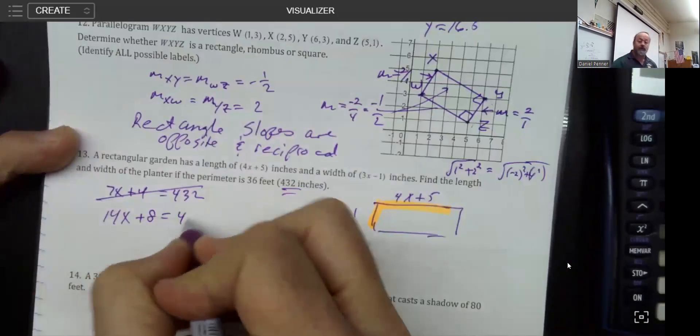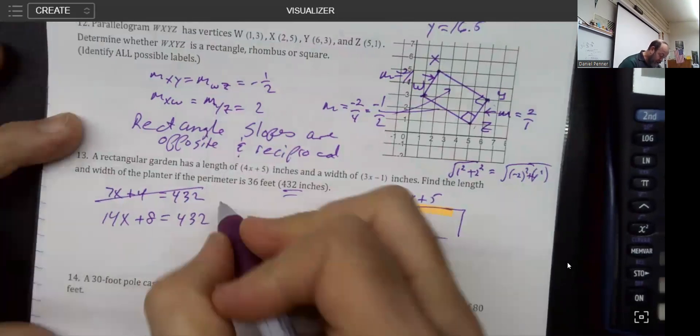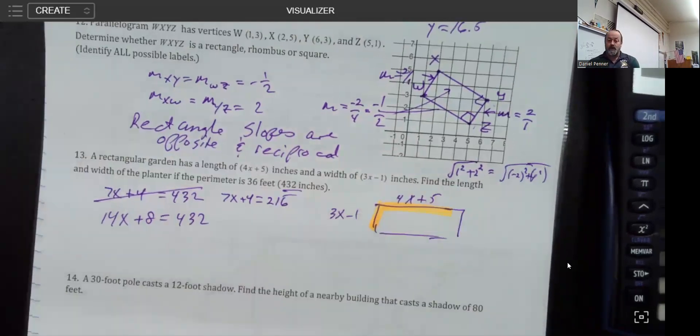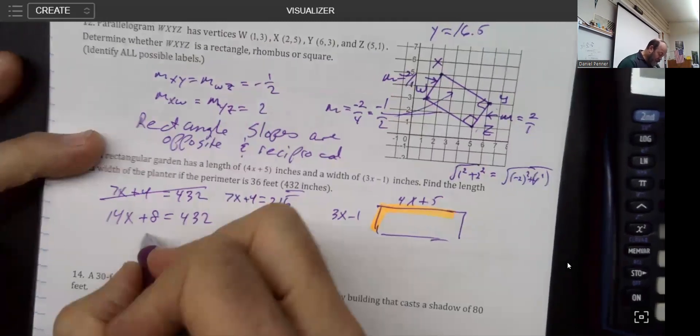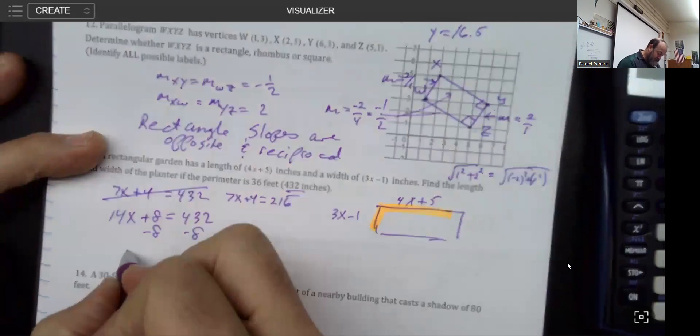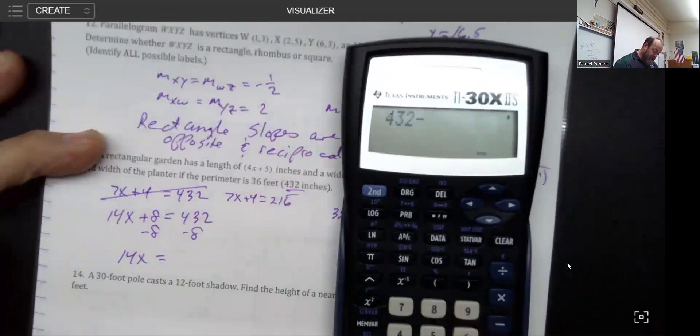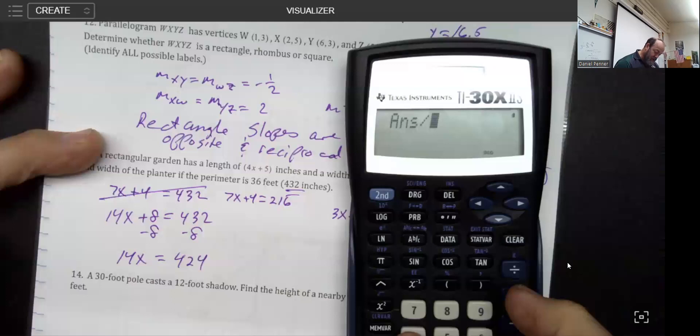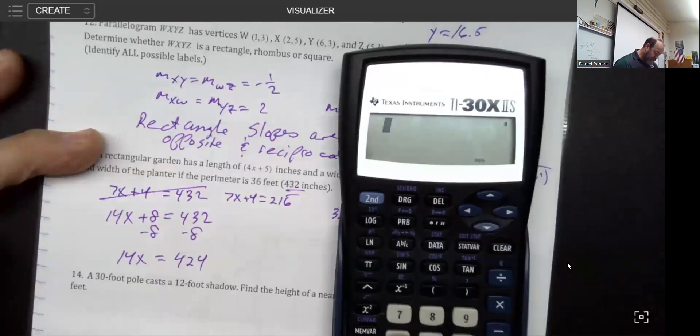A lot of people are going to go, 'Well fine, these two things add up to 432,' but that would be incorrect because the perimeter needs to go all the way around, and I only gave you two of the four sides so far. So I would want to double this and set it equal to 432. Or I could have taken this number right here and cut this perimeter in half. I'm going to go with this guy right here. 14x, let's see, 432 minus 8, we're looking at 424 divided by 14.